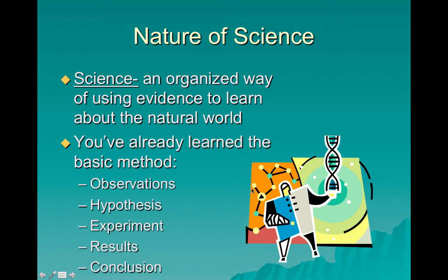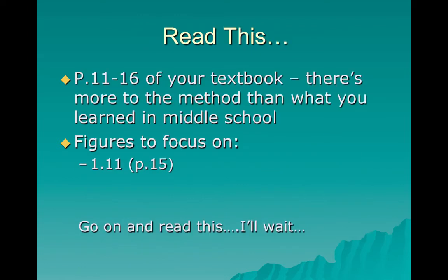Now I really need to remind you about the nature of science, because scientific and experimental design pops up on the AP exam from time to time. You'll want to look at pages 11 through 16 of your textbook, focusing on figure 1.11 on page 15. You can pause here and skim through that. Key things to know: formulate a hypothesis, identify independent and dependent variables, establish a control group, establish enough experimental groups to collect a variety of data, ensure reliable results by repeating the experiment many times, and make sure others can reproduce your results using your method.